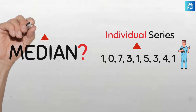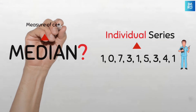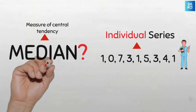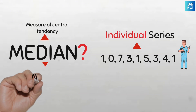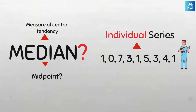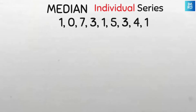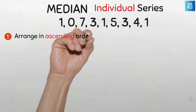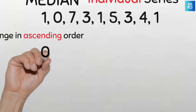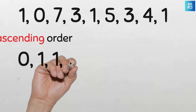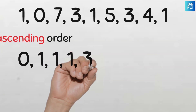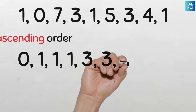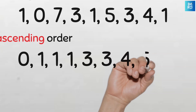Remember that the median is a measure of central tendency that indicates the middle point of a data set. So our task here is simply to find the middle point. To do this we need to first arrange the data in ascending or descending order. I prefer the ascending order because it's just logical. So here we'll have 0, 1, 1, 1, 3, 3, 4, 5, and 7.